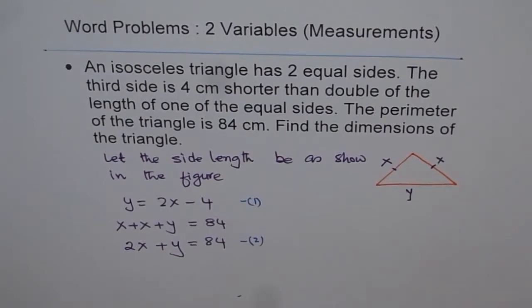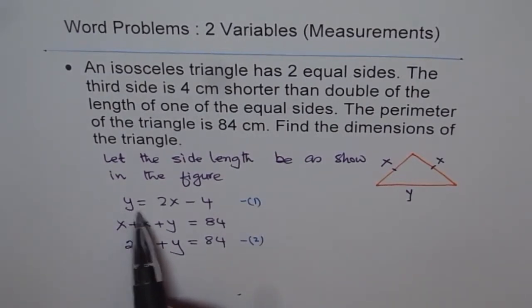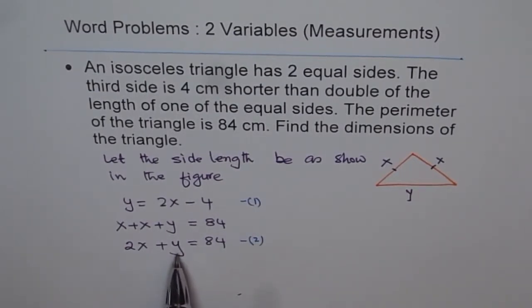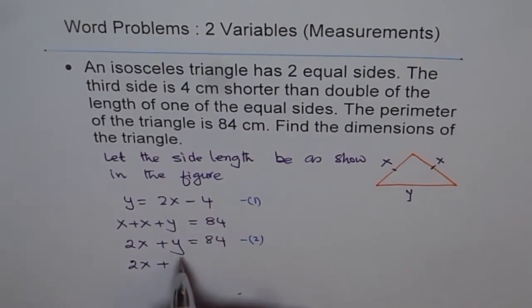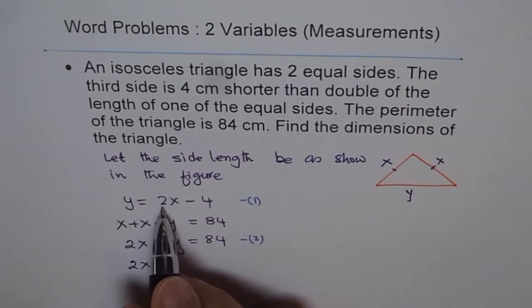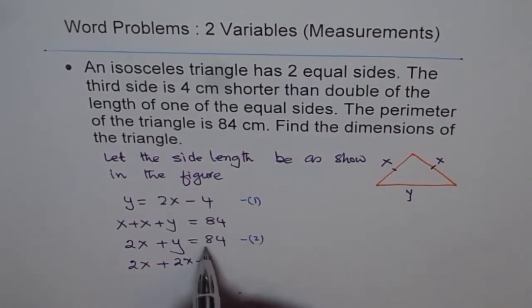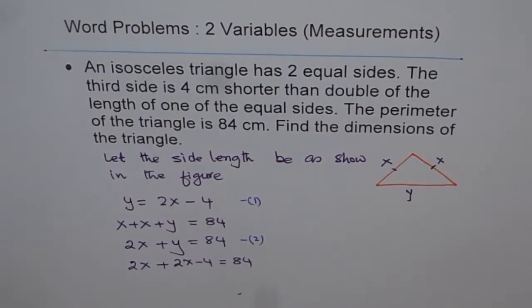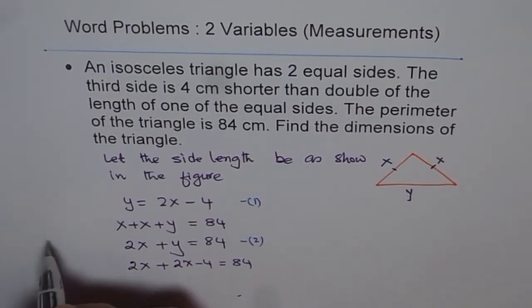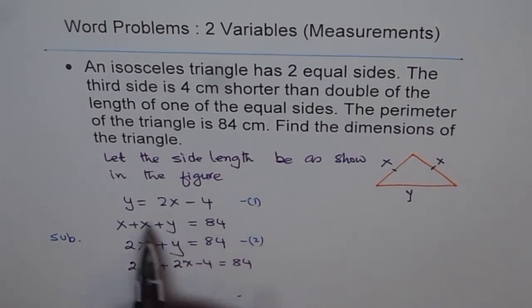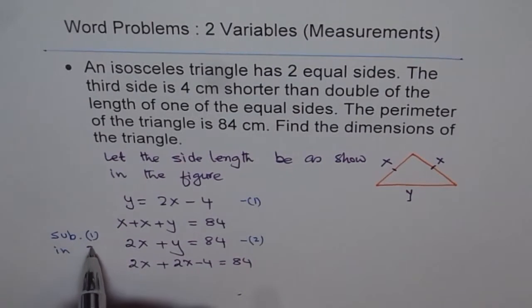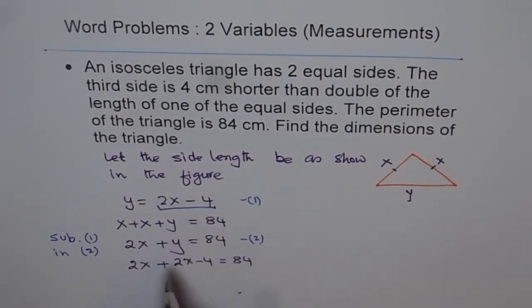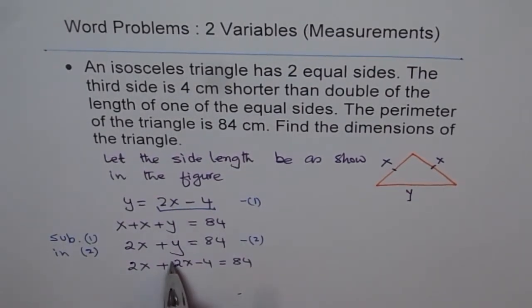How should we solve it? Since we know y in terms of x, substitution is a good method. Let us substitute the value of y, which is 2x minus 4. So write this as 2x plus 2x minus 4 equals 84. What we did was substitute the value of y from equation 1 into equation 2.